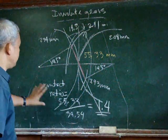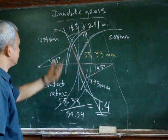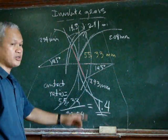So our new contact ratio, after cutting our gears, will be 1.4.